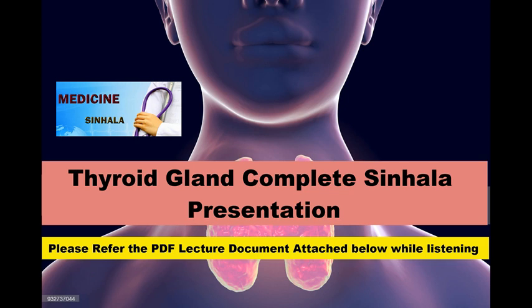The strap muscles' origins, insertions, and innervations are important. Posteriorly, the thyroid gland is directly related to the esophagus most posteriorly, and in front of that is the trachea. The tracheoesophageal groove contains the recurrent laryngeal nerves, which are an important anatomical relation to the thyroid gland.